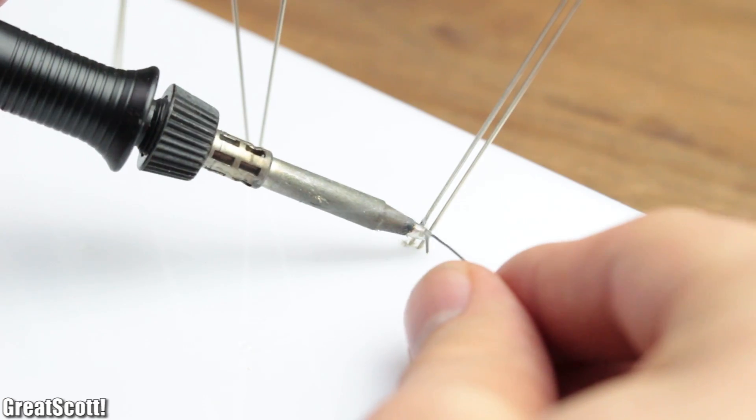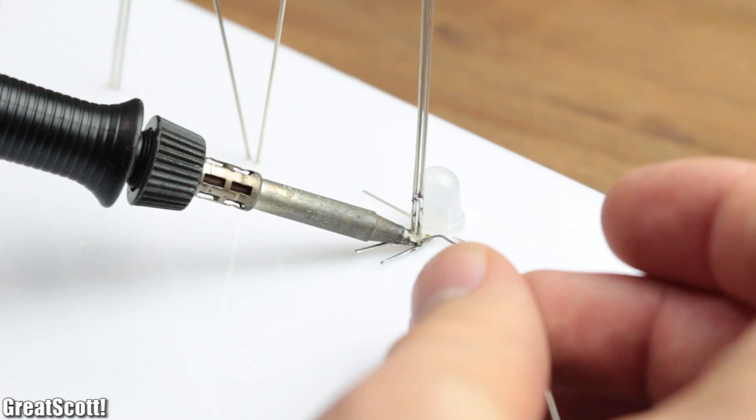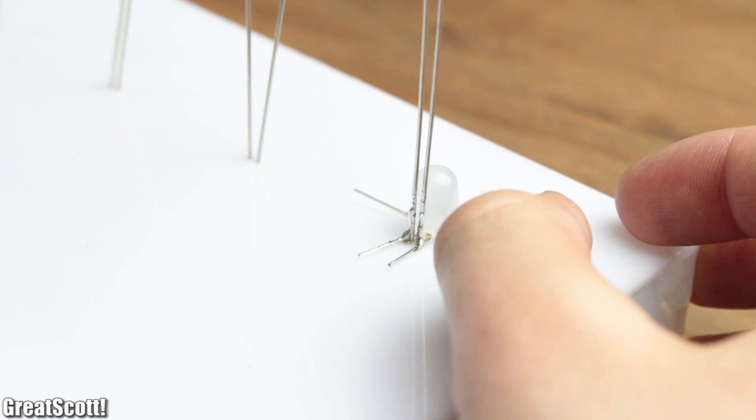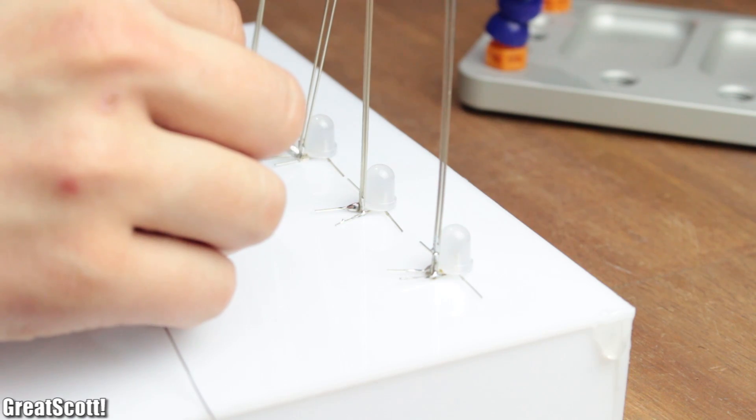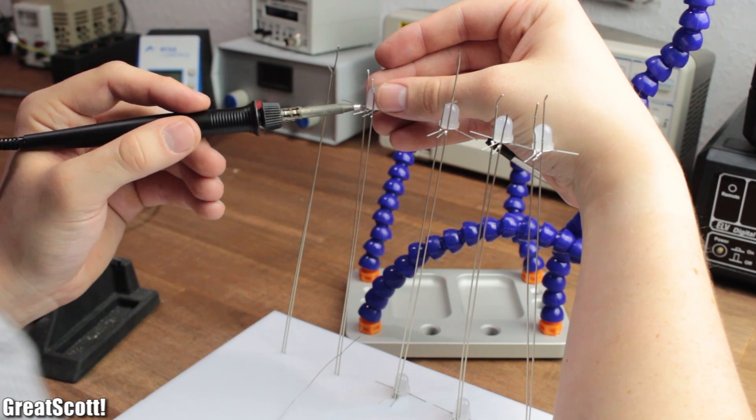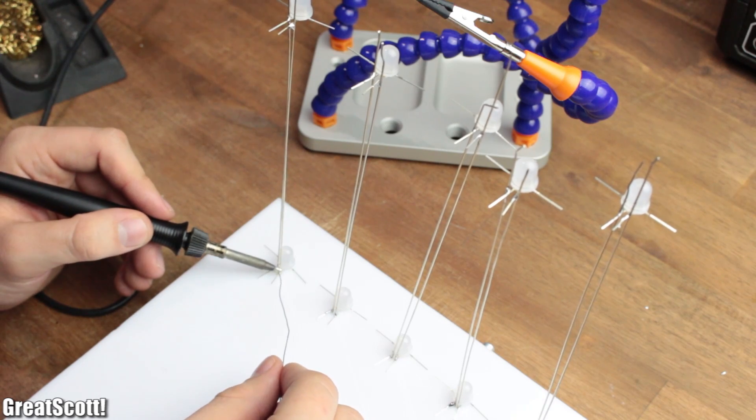Afterwards, another LED can be soldered onto the same two copper wires right above the base plate. You need to repeat this process until all the wires of the first wall have their top and bottom LED.